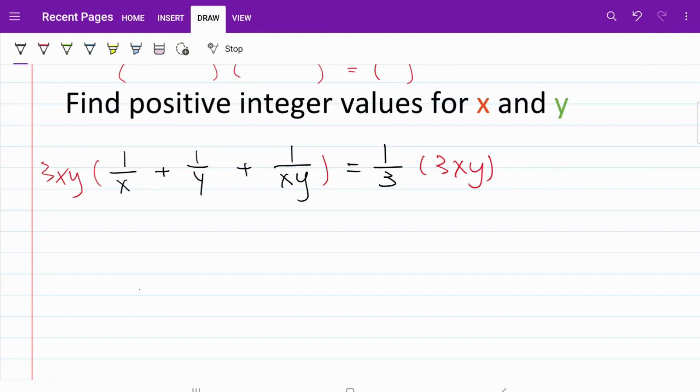So we now have 3x plus 3y plus 3 is equal to xy on the right hand side. If we rearrange the equation, it now becomes xy minus 3x minus 3y is equal to 3.